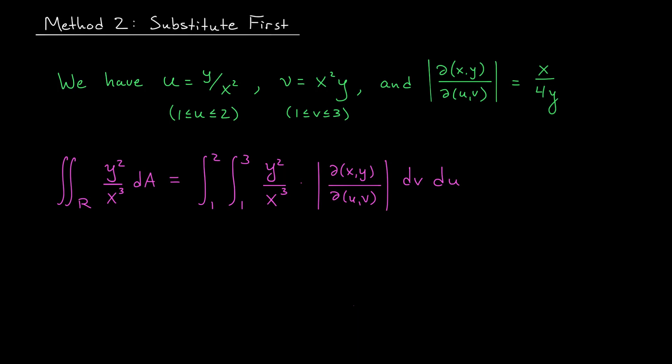Let's give it a try here. I'm going to replace the absolute value of this Jacobian with this expression above. That'll give me the integral from 1 to 2 of the integral from 1 to 3 of y squared over x cubed times x over 4y dv du. It looks like there's some cancellation here. We can throw out a y, and we can throw out an x. Pulling out the constant term, we have 1 quarter times the integral from 1 to 2 of the integral from 1 to 3 of y over x squared dv du.